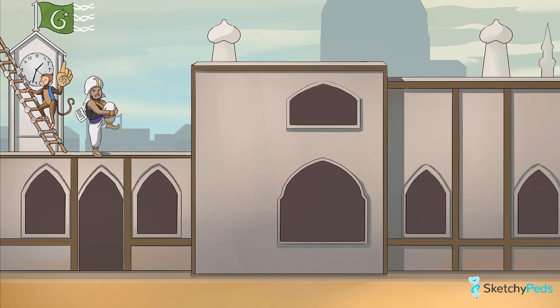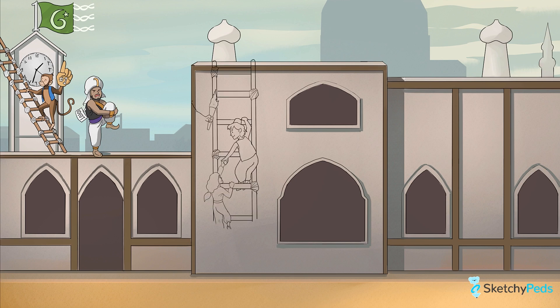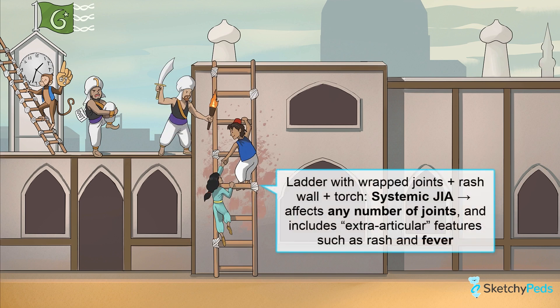While JIA is subdivided into seven major subtypes, we will focus on the three most common ones, starting with systemic JIA, which is responsible for about 10 to 20% of all cases. It will be depicted around this arthritic ladder with wrapped joints serving as the escape route for young Aladdin and Princess Bedroubadour.